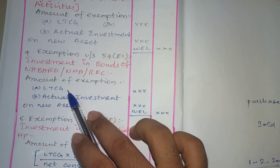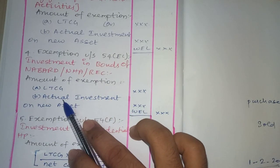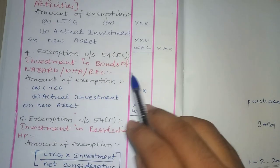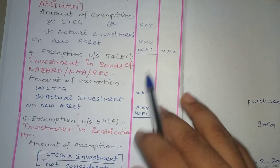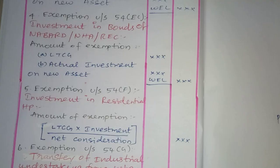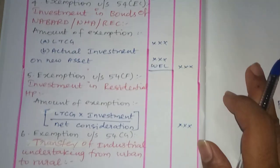The exemption amount under Section 54EC is: Long Term Capital Gain or Actual Investment in the New Asset, whichever is least. While computing the problems, it will be easy for us to understand much more.